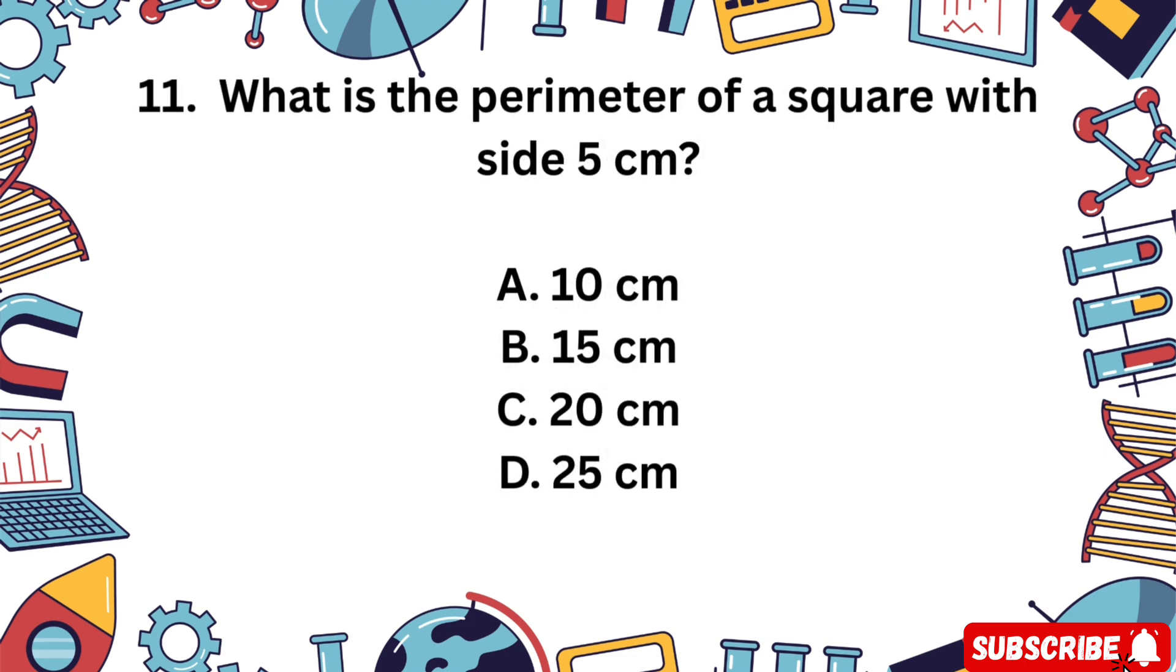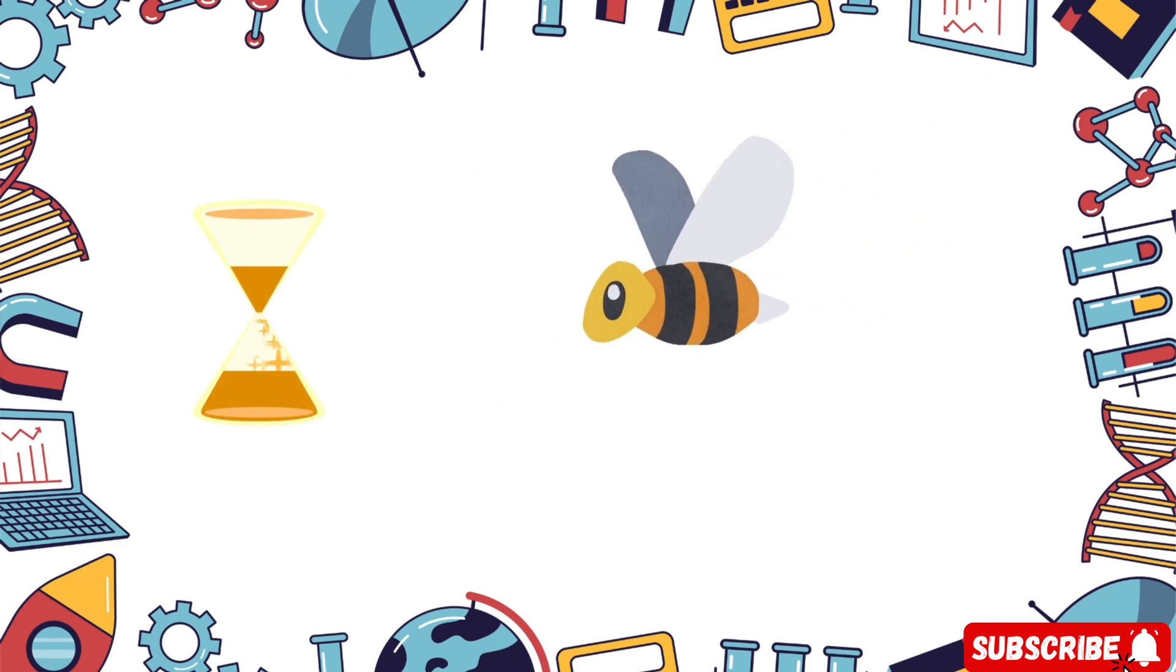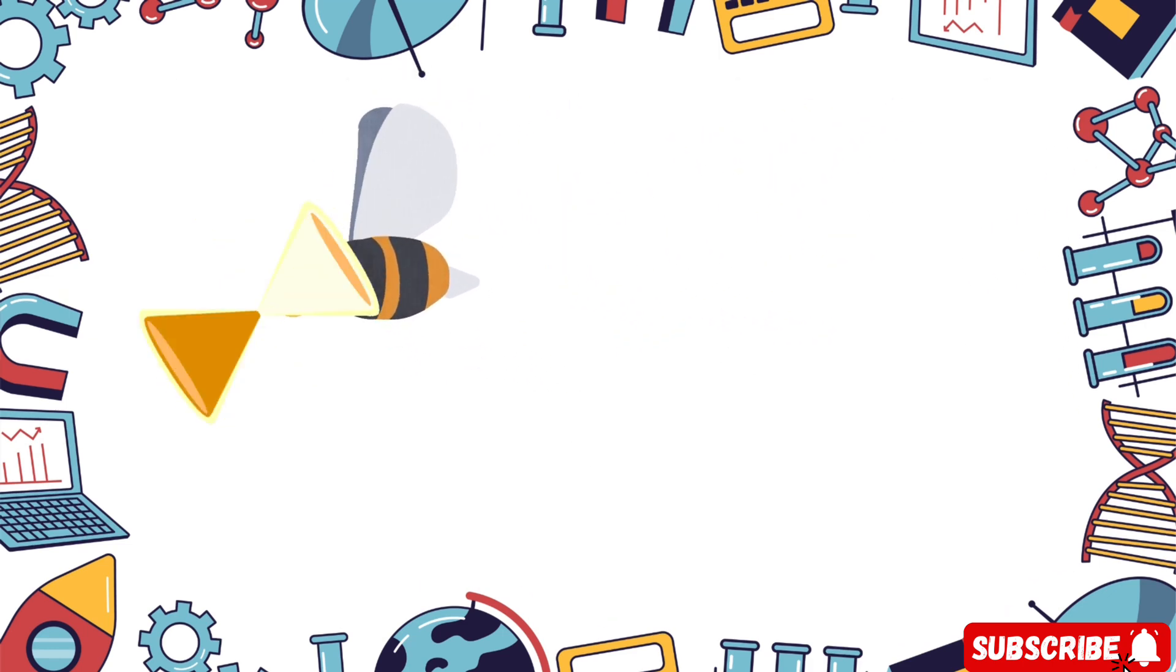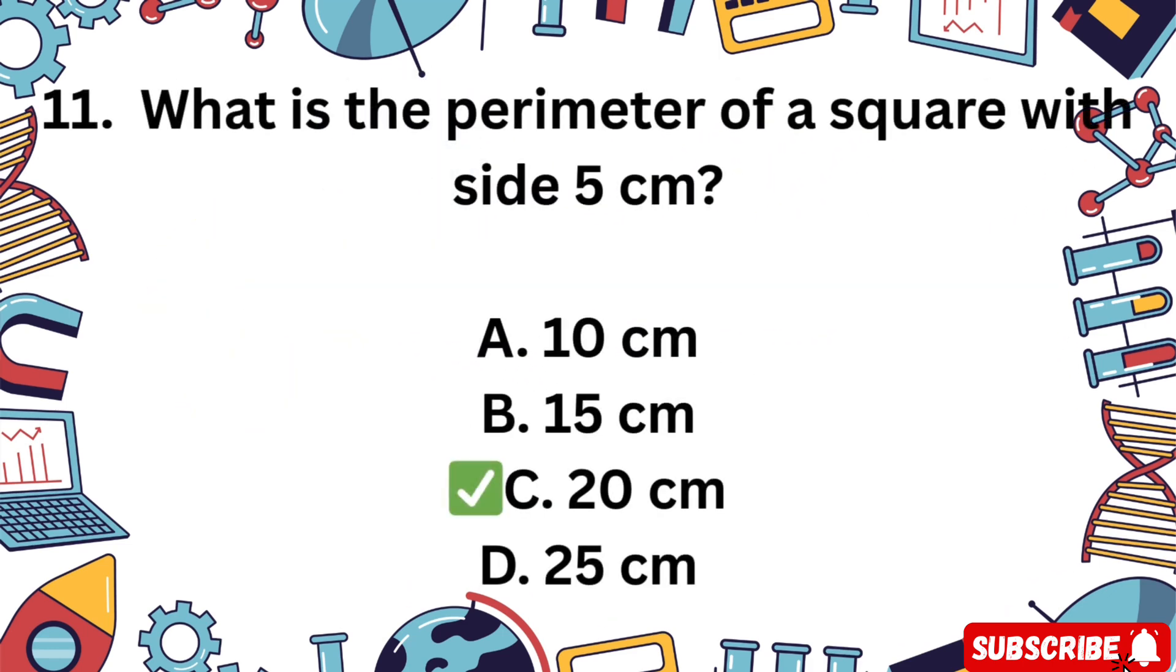Question 11. What is the perimeter of a square with side length 5 centimeters? A 10 centimeters, B 15 centimeters, C 20 centimeters, D 25 centimeters. Remember, perimeter means the total length around. You have 5 seconds. The correct answer is C 20 centimeters. That's 5 times 4 sides.